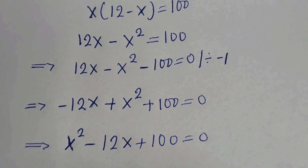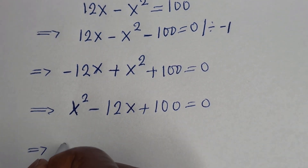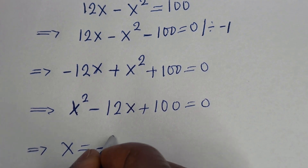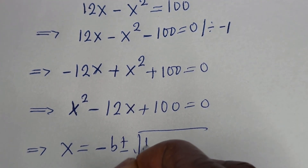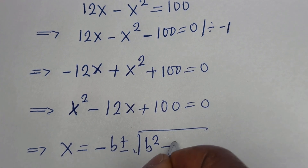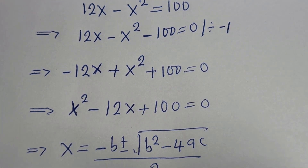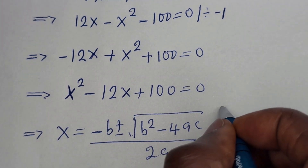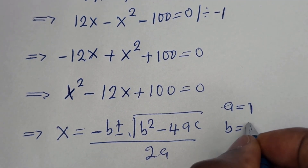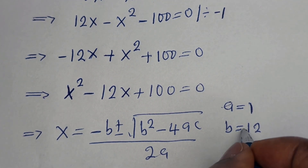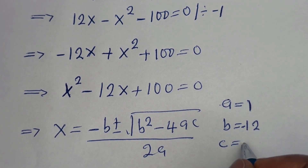This is a quadratic equation which can be solved using the quadratic general formula. From the quadratic formula, S equals negative B plus or minus the square root of B squared minus 4AC, all over 2A. From this equation, A is equal to 1, B is equal to negative 12, and C is equal to 100.